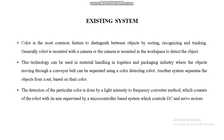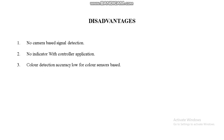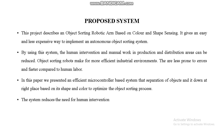In the existing system, color detection is done by a light intensity-to-frequency converter method, which consists of a robot arm supervised by a microcontroller-based system. Disadvantages of the existing system include no camera-based signal detection, no indicator with controller application, and low color reduction accuracy for color sensors.